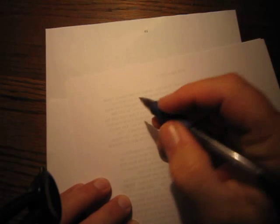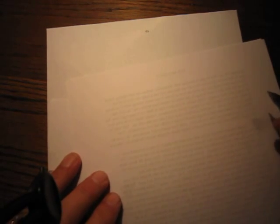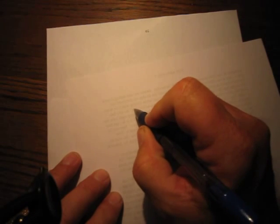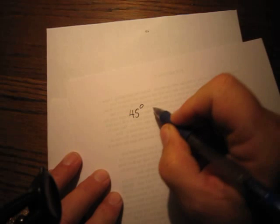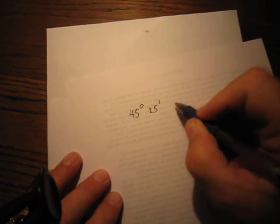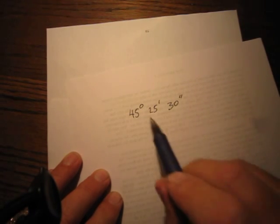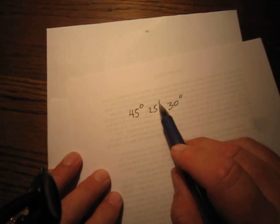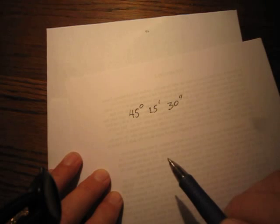Now, we talked last time about entering in degrees, minutes, and seconds. For example, 45 degrees, 25 minutes, and 30 seconds. Once again, here's the degree symbol, here's the minute symbol, and here's the second symbol.